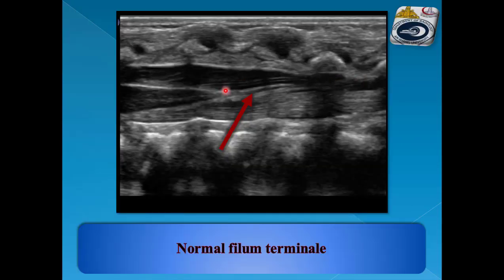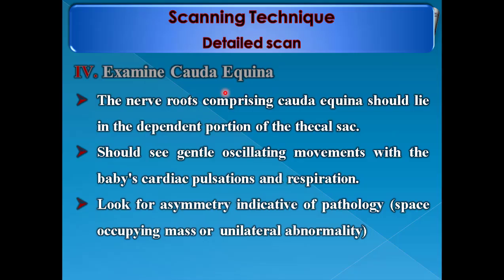This is the appearance of the filum extending from the conus — we can follow it downward to S2 vertebra. The fourth question is: examine the cauda equina. The nerve roots comprising the cauda equina should lie in the dependent portion of the thecal sac. You should see gentle oscillating movements with the baby's cardiac pulsations and respiration. Look for asymmetry indicative of pathology.